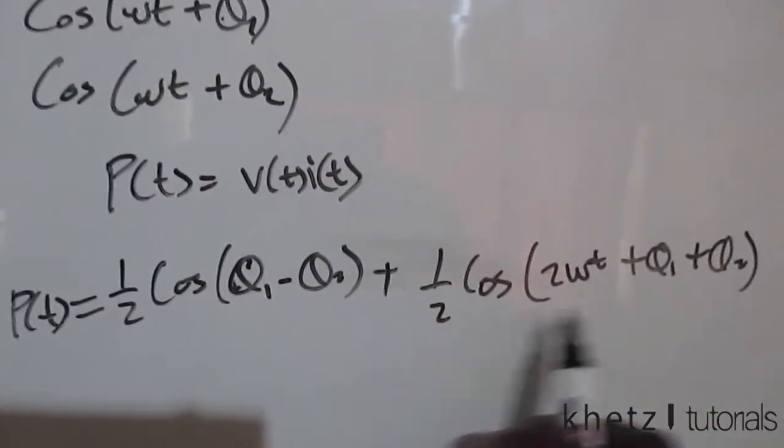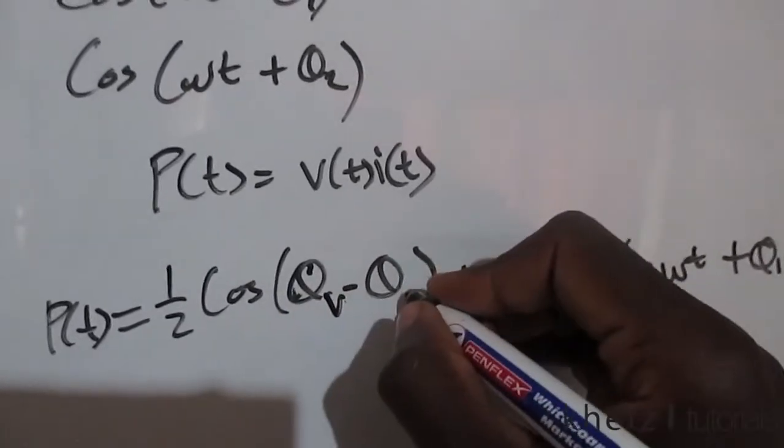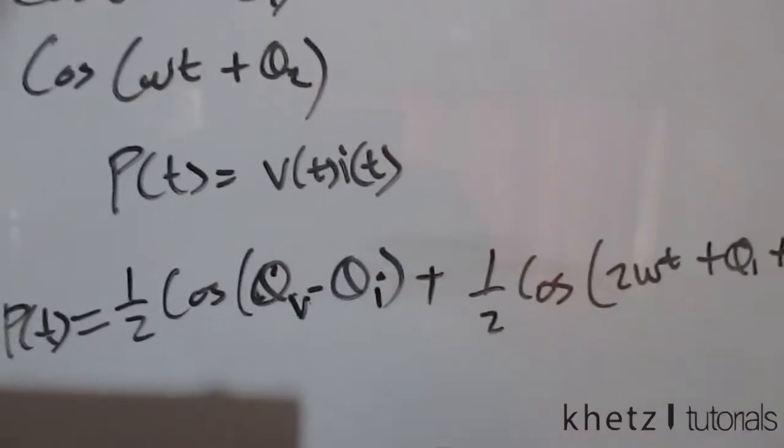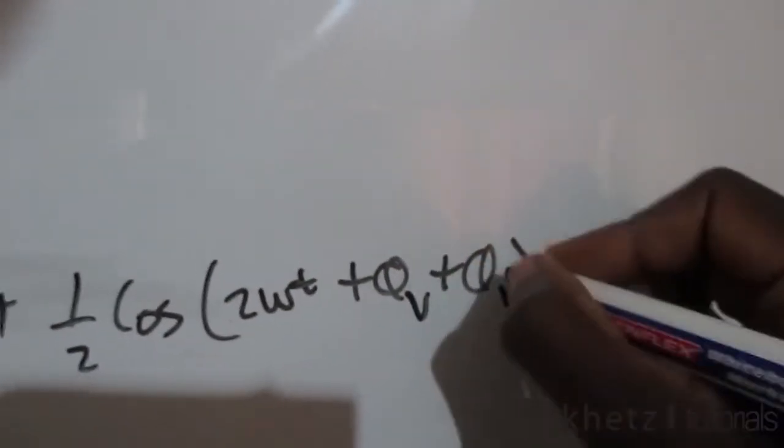So instantaneous power is known to be this where theta one is for voltage and the other one is for current. So this is for voltage and this is for current.